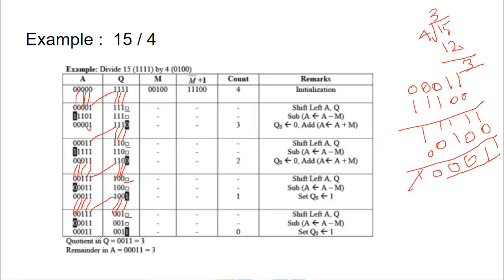When count reaches zero we stop. Q holds the quotient and A holds the remainder. For 15 divided by 4, the quotient is 3 and the remainder is 3, which is what we get in our result.